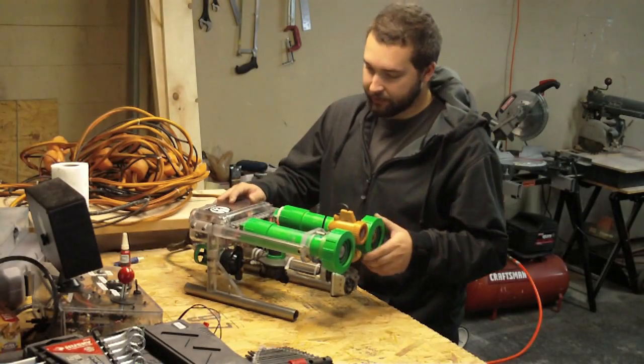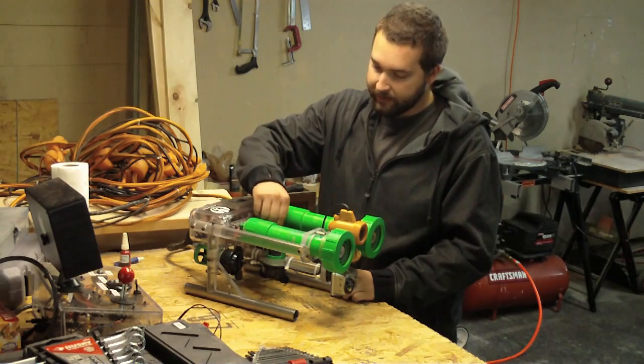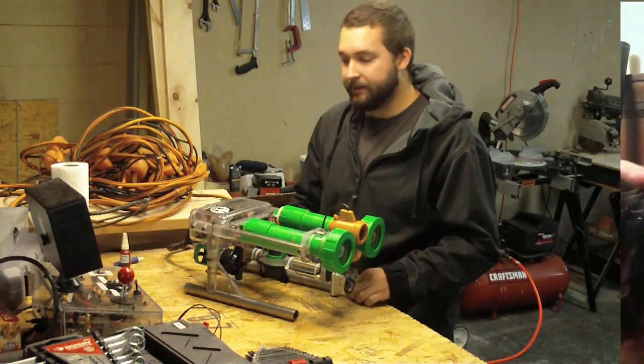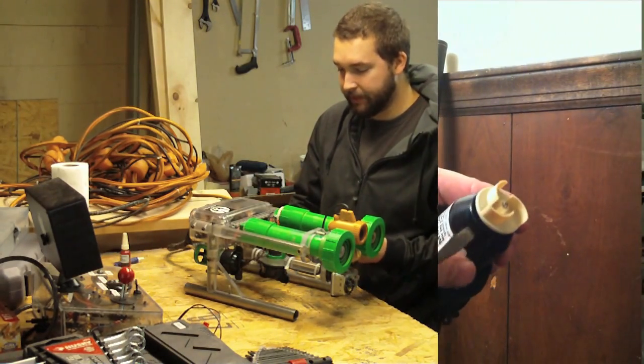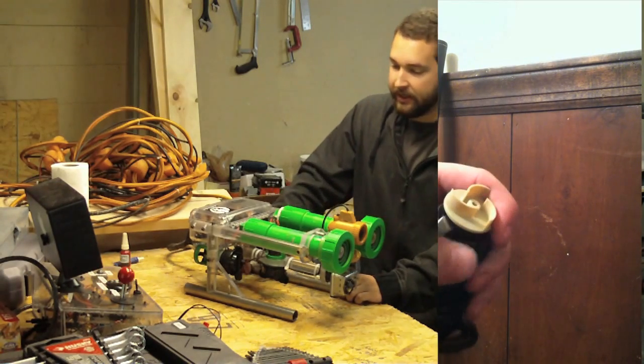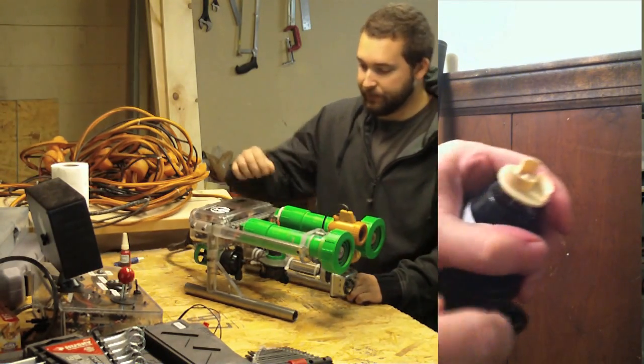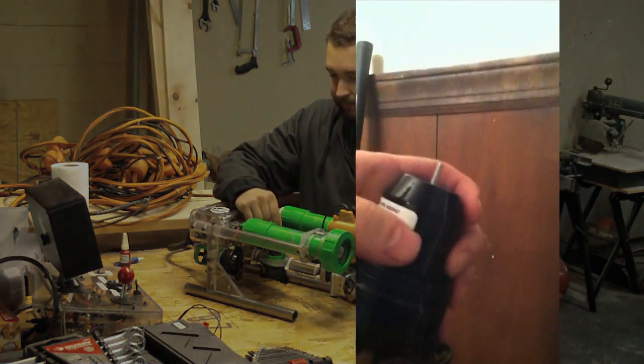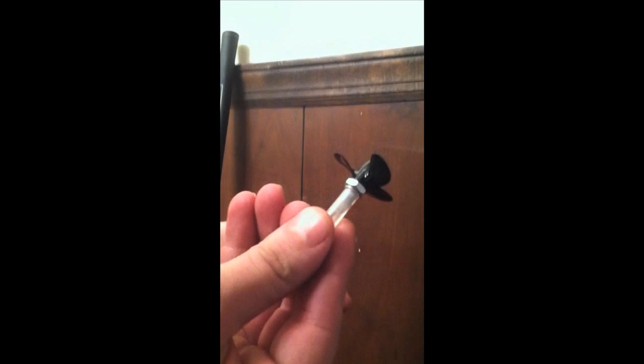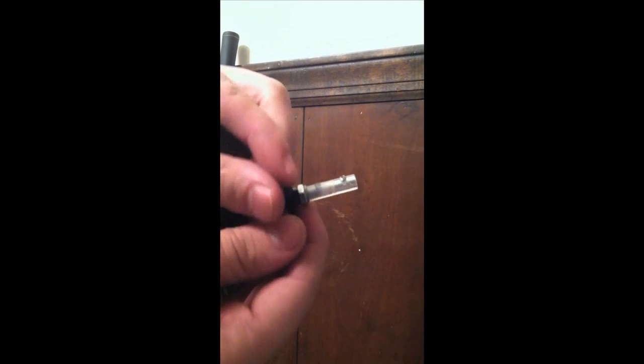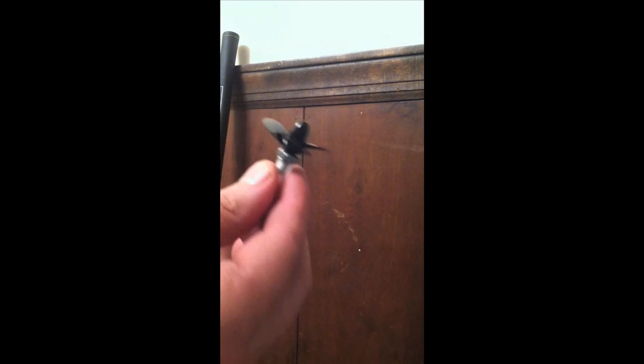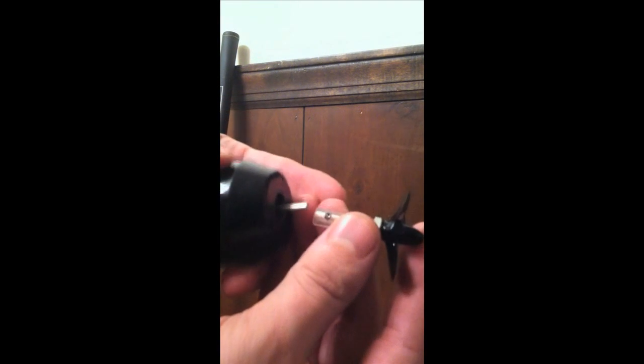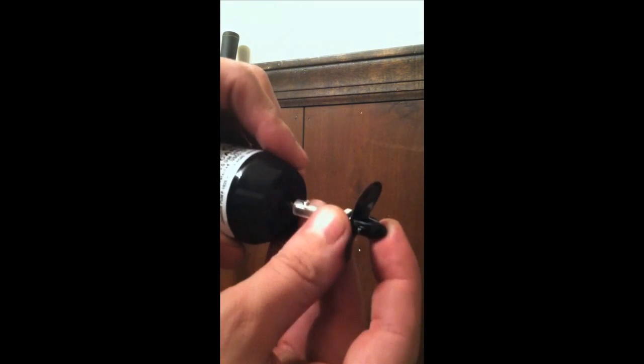So basically how this works is it's powered by bilge pump motors that have been modified to accept a prop using an adapter. I've pried off the impeller and applied a prop that I got that's for remote control boats. Now I machined an adapter on the lathe, which will accept the output shaft and on the other end threads a remote control boat propeller onto it. So I'm going to pop that on and just tighten down the set screw.